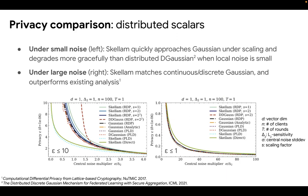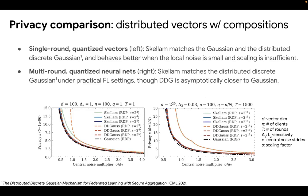On the right, when we have very high privacy, we can see that the Skellam mechanism performs as good as the Gaussians, and also outperforms the existing direct analysis for scalars. When we consider the distributed vector case along with compositions, we also see similar results. On the left, we have clients starting with real vectors, and then the entries are rounded to integers before adding noise. Similarly, Skellam matches the Gaussians under the effect of scaling, and when the scaling is insufficient, it behaves slightly better than the distributed discrete Gaussian. On the right, we have a practical federated learning setting with a model of median parameters and T equals 1500 rounds, and we see that even though the distributed discrete Gaussian is asymptotically closer to Gaussian, Skellam practically gives the same performance.